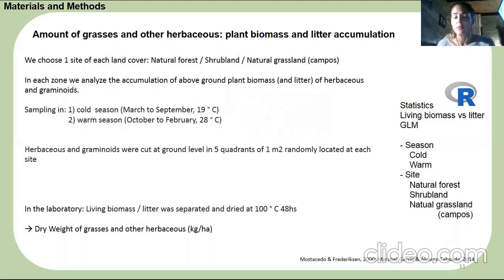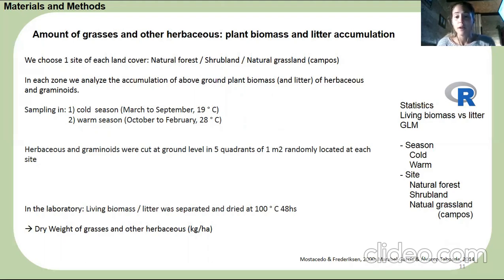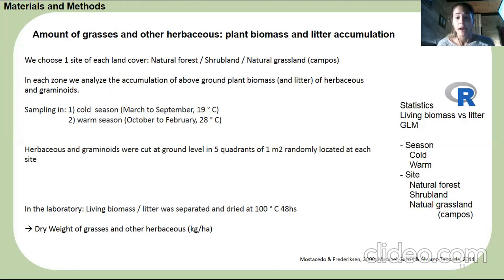We used the amount of grasses and other herbs to calculate the plant biomass and litter accumulation in the buffer zone, sampling one site per land cover type. In each zone, we analyzed the accumulation of above-ground plant biomass and litter of herbs and grasses. We took two samples — one in the cold season and one in the warm season. Shrubs and grasses were cut at ground level in five quadrants of one square meter each, randomly located at each site. In the lab, we separated the living biomass and litter, then dried them at 70°C for 48 hours to obtain dry weight.